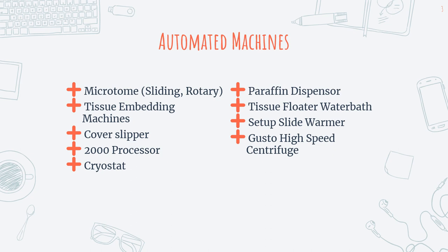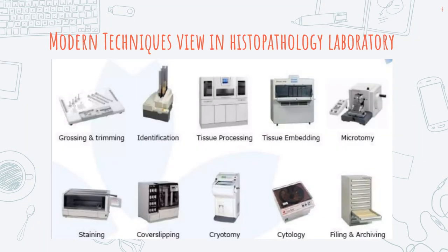These are some examples of automated machines found in the histopathology section: microtome, tissue embedding machines, cover slippers, tissue processor, cryostat, paraffin dispenser, tissue floater, water bath, slide warmer, and high speed centrifuge. These are sample automatic machines in our histopathology lab — covering grossing and trimming, identification, tissue processing, embedding, microtomy, and others.